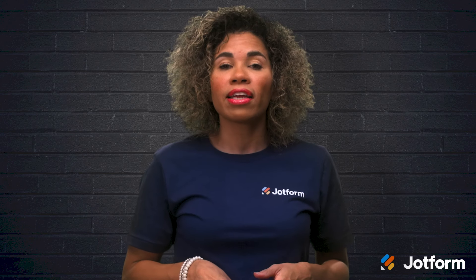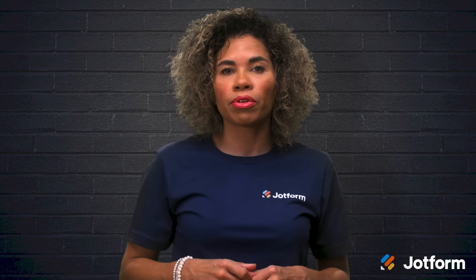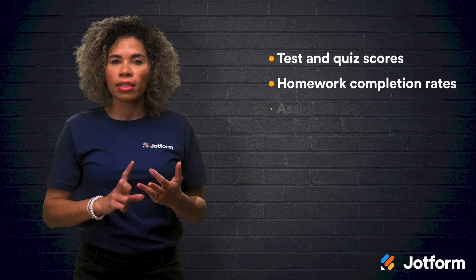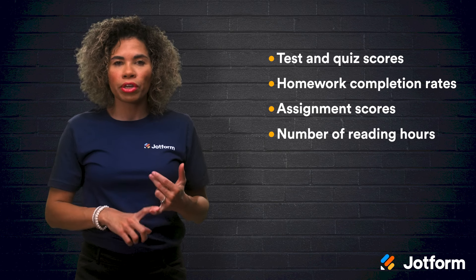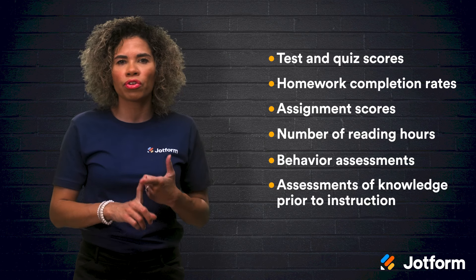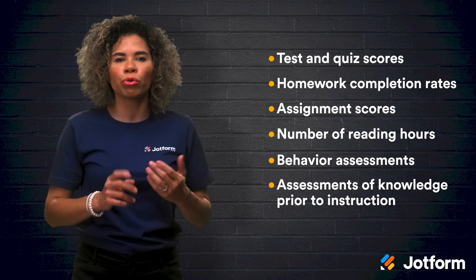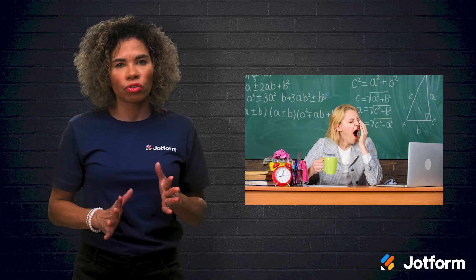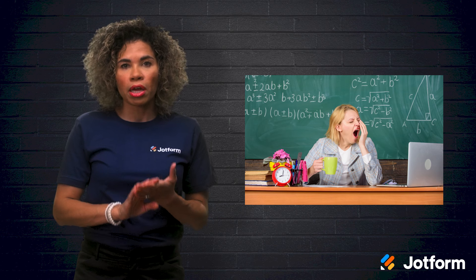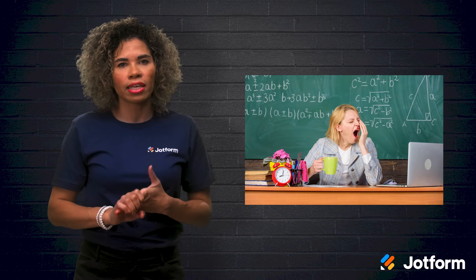Try to avoid adopting a generic tracking system. Instead, customize it according to your student's grade level, goals, and curriculum. Some things you might track are test and quiz scores, homework completion rates, assignment scores, number of reading hours, behavior assessments, as well as assessments of students' knowledge and abilities prior to instruction. It's essential to keep your student tracking forms up to date to be successful. When deciding on a system, be sure to go with one that is easy to keep up with.